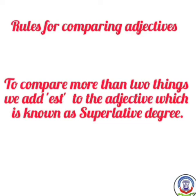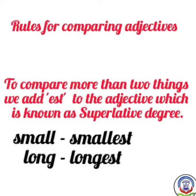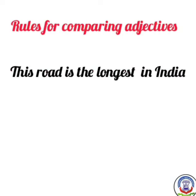To compare more than two things, we add -est to the adjective, which is known as the superlative degree. Small → smallest; long → longest. Is mein 'est' add ho jaata hai. Example: This road is the longest in India — poori India mein sab se lamba road hai. 'The' is used before the superlative — jo bhi -est waala word hota hai, uske aage 'the' use hota hai.